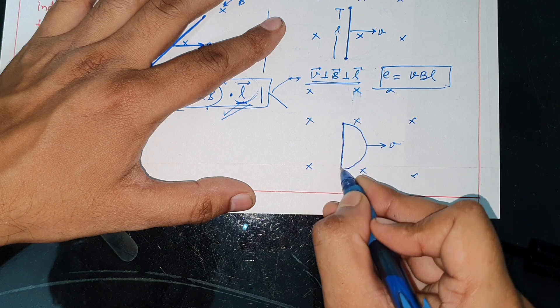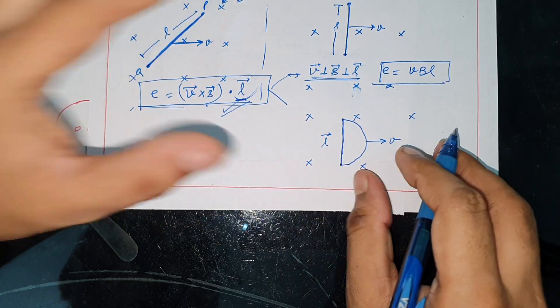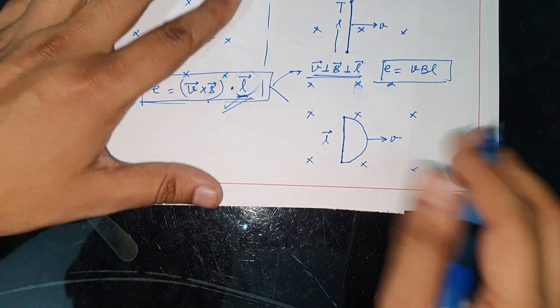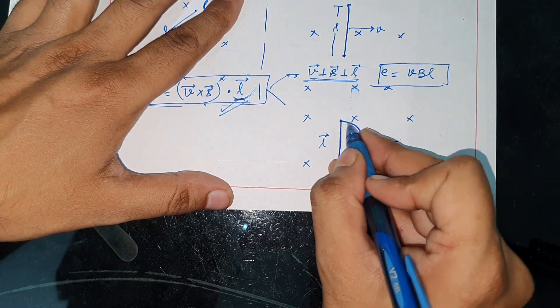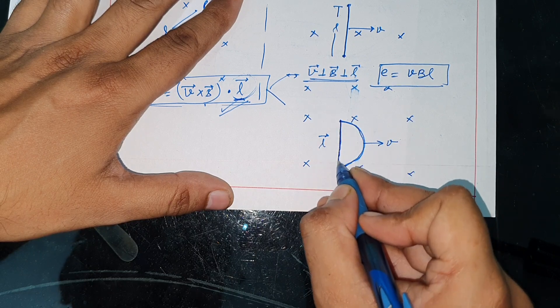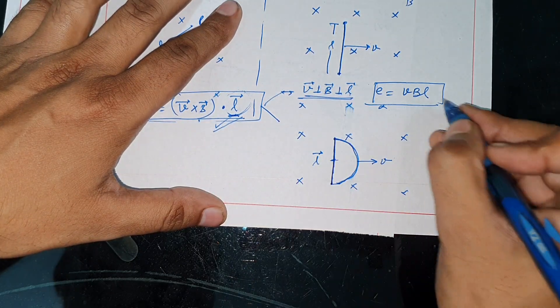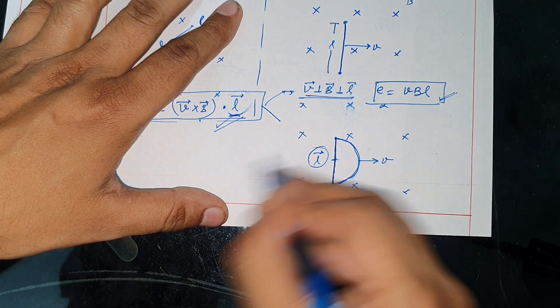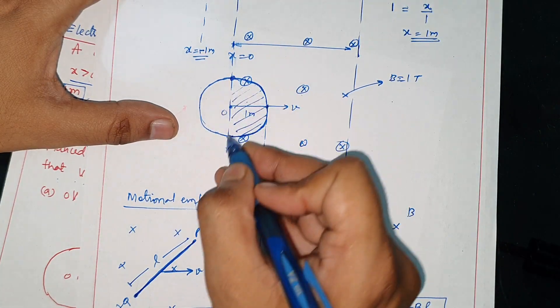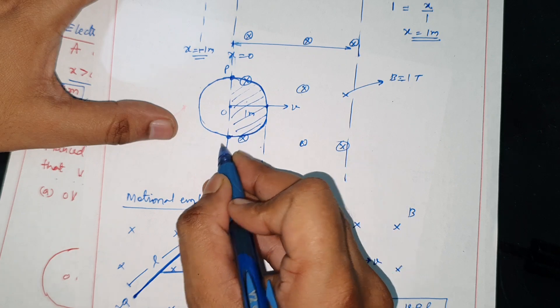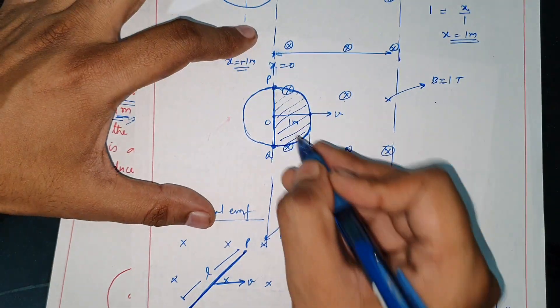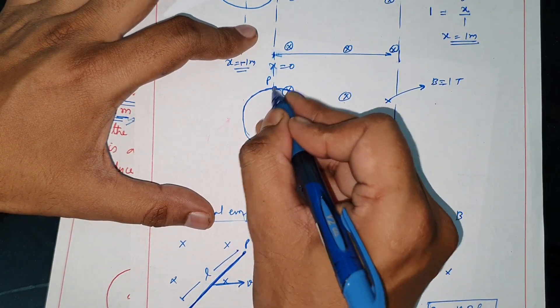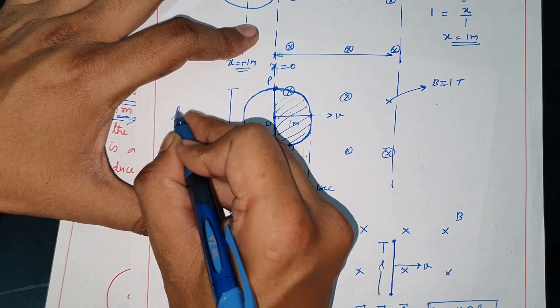This is our L vector, this is a displacement vector. So you can replace this circular loop. If you have this circular loop, you can replace this with a rod with this rod, here P and here Q.